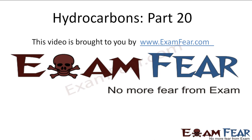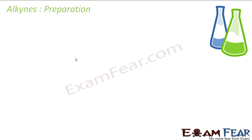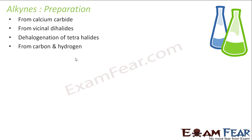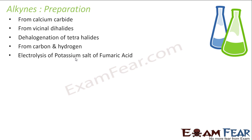Hello friends, this video on hydrocarbons part 20 is brought to you by examfier.com — no more fear from exam. We'll talk about the preparation of alkynes. We can prepare from calcium carbide, from vicinal dihalides, from dehalogenation of tetrahalides, from carbon and hydrogen, from electrolysis of potassium salts of fumaric acid, and from acetylide. We have six methods of preparing alkynes and we'll study all six.